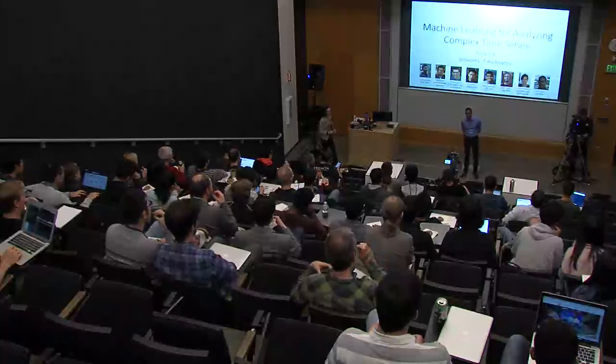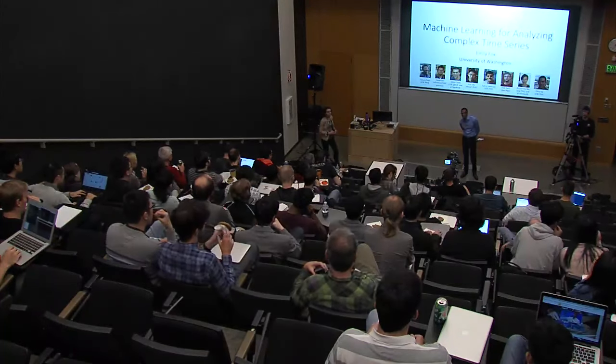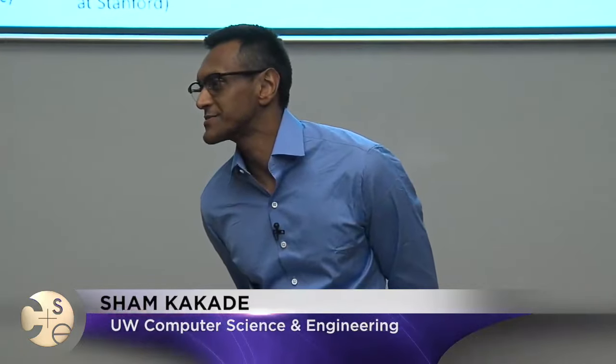It's a pleasure to introduce a colleague and friend from the statistics department at UW. Emily spent a long time at MIT for her education — she was an undergrad there, did a master's there, and her PhD in EECS with Alan Willsky. After that, she did a postdoc in statistics at Duke with Mike West and David Dunson.